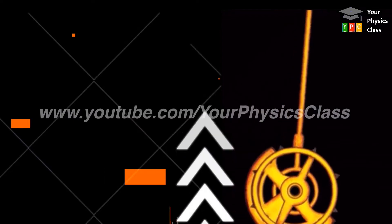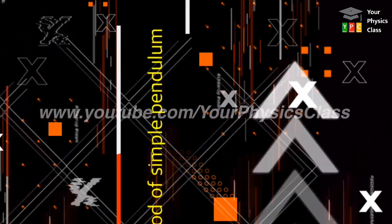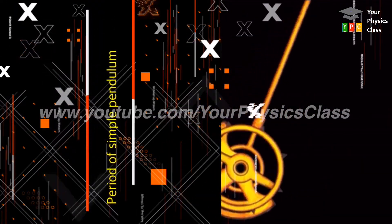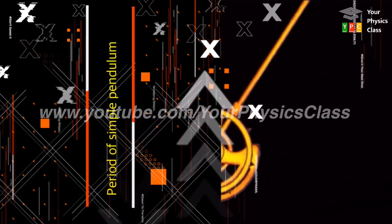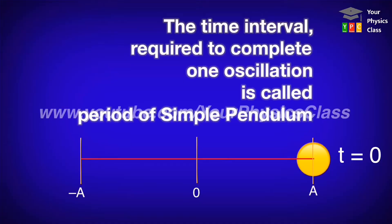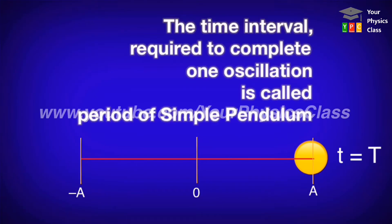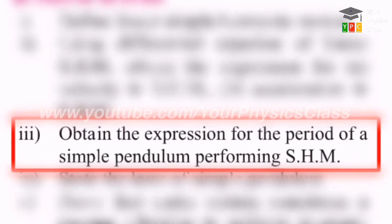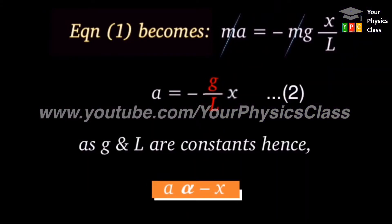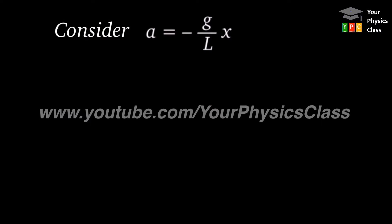Let's go to derivation of time period of simple pendulum. Before that, let us recall the definition of period of simple pendulum. The time interval required to complete one oscillation of bob is called time period of simple pendulum. Friends, if you get this question, then you should write correctly up to equation 2 and then you should proceed from that equation.